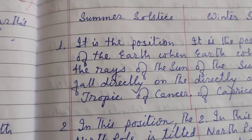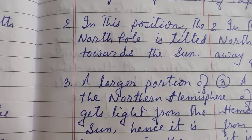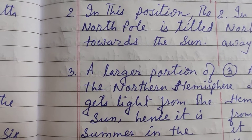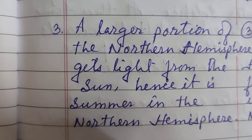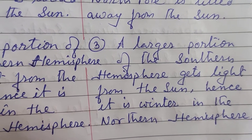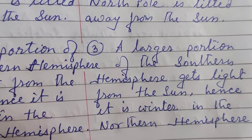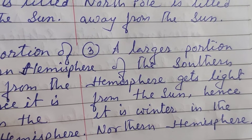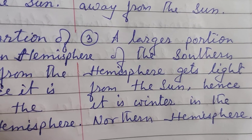During summer solstice, a larger portion of the northern hemisphere gets light from the Sun, hence it is summer in the northern hemisphere. During winter solstice, a larger portion of the southern hemisphere gets light from the Sun, hence it is winter in the northern hemisphere.